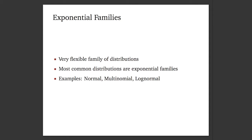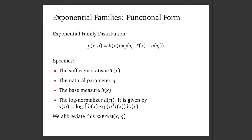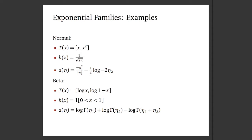I'll go into exponential families because it's important for constructing deep exponential families. They're a very big class of distributions — normal, multinomial, log normal, Poisson, and many others. The functional form of an exponential family specifies a sufficient statistic, which tells you what about the data is important; some parameters related to that statistic; a base measure; and a normalizing function which ensures it is a proper distribution.